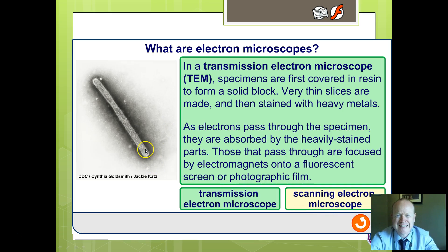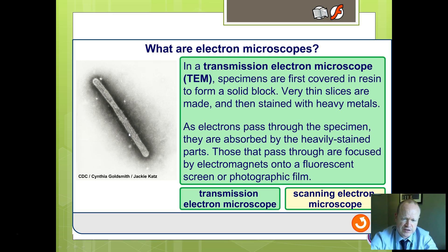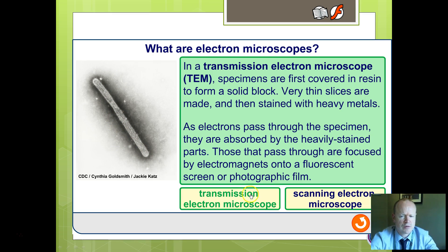The transmission electron microscope, or TEM. The specimen can be covered and stained with heavy metals to make it show up. The beam of electrons is transmitted through the specimen — hence the name 'transmission'. This gives a cross-sectional view, as if sliced through it, just like a light microscope. The image is focused onto a film.